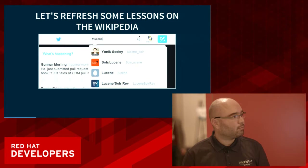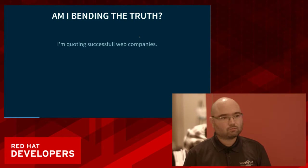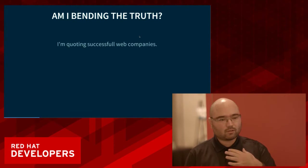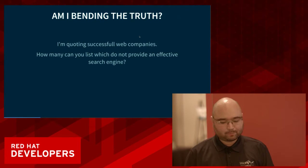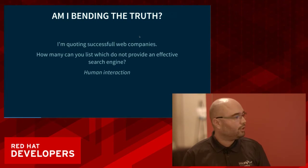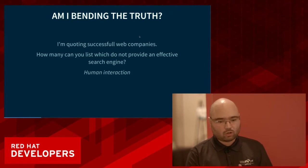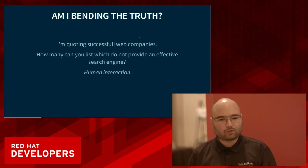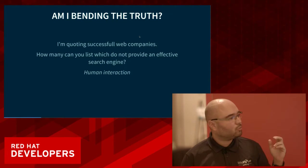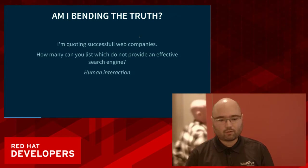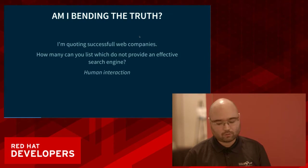From all the successful web companies you know, is there any that doesn't have a very powerful text input? The problem is really with human interaction. If you're integrating different IT systems, you might be fine using foreign keys and published codes. But when a human needs to search something, the traditional technologies in the Java Persistence API will never be fit for that purpose.